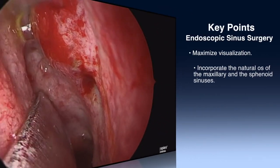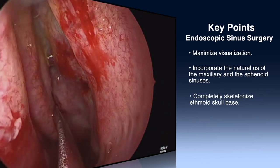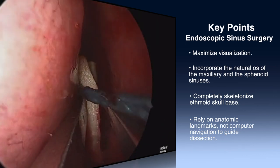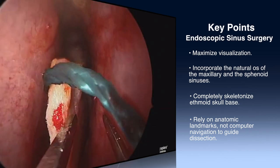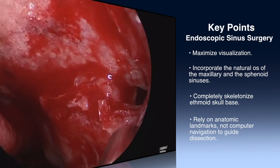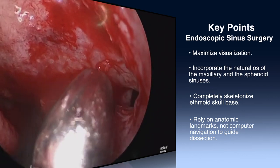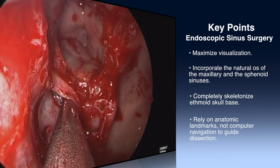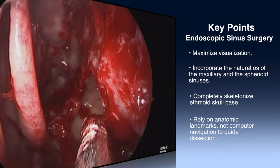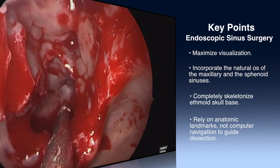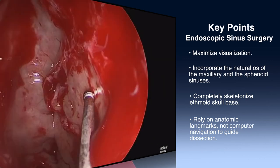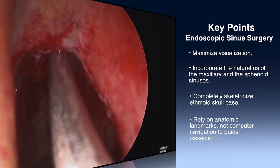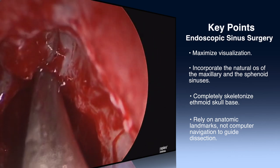During comprehensive endoscopic sinus surgery, key points include the following. First, maximizing visualization by minimizing bleeding during the case — this can be achieved with patient positioning as well as topical medication including 1-to-1000 epinephrine, as well as keeping blood pressure and heart rate lowered. When performing maxillary sinus surgery, it's important to ensure the natural ostium is included in the maxillary antrostomy, and this also goes for the sphenoidotomy. It should also be the goal to have complete skeletonization of the skull base and the lamina papyracea when completing a comprehensive sinus surgery, as ensuring that will give you the best post-operative outcome. Lastly, one should rely on anatomic landmarks and surgical skill for dissection and confirm anatomy with navigation, but not rely on navigation as a primary identifier of anatomy.